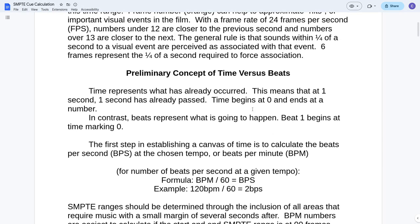Preliminary concept of time versus beats. This is really important to understand or else you'll really mess up your calculations. Time represents what has already occurred. This means that at one second, one second has already passed. Time begins at 0 and ends at a number. So remember when you're dealing in time, the beginning of time is 0. But in contrast, beats represent what is going to happen. Beat 1 begins at 0. Beat 1 actually starts at the marking 0. A beat is not something that has happened. A beat is something that is happening.